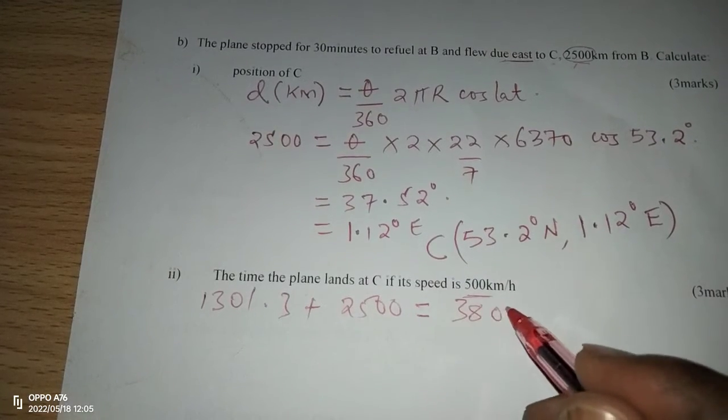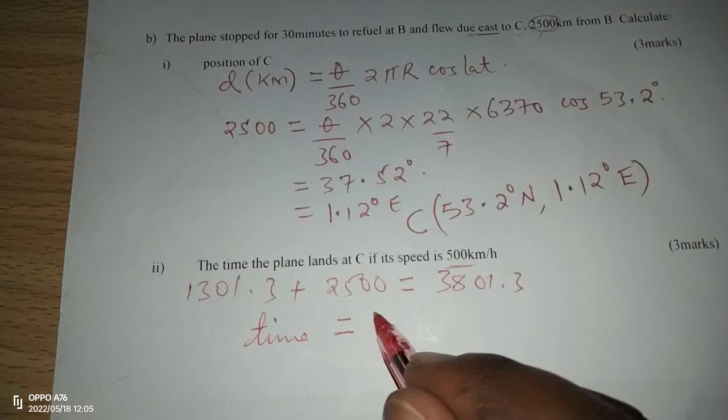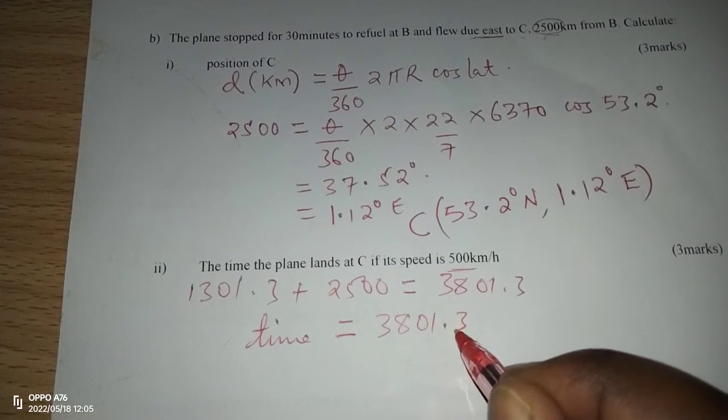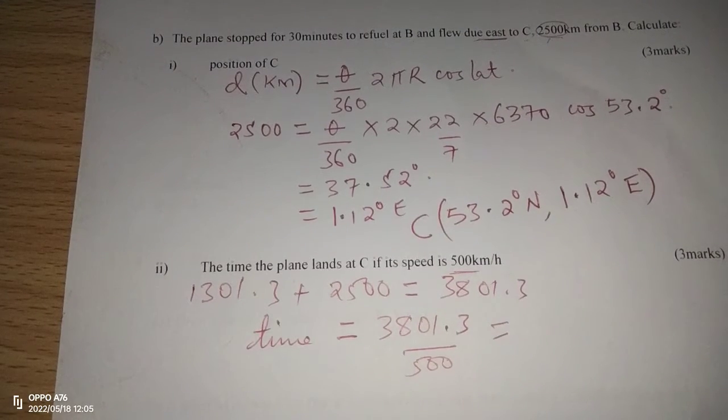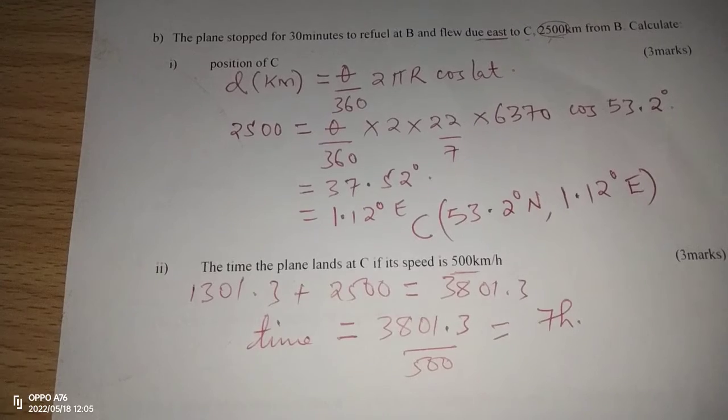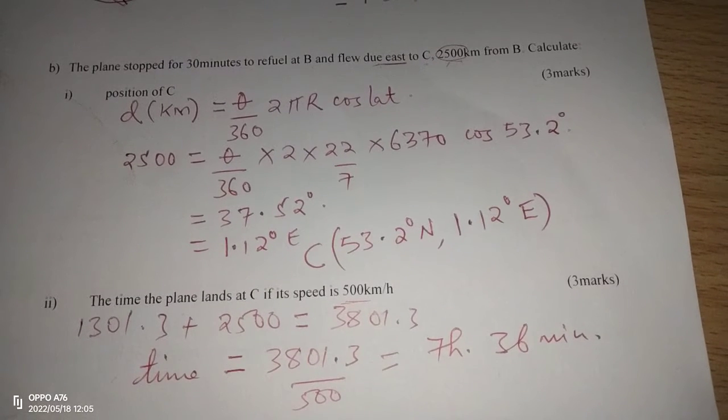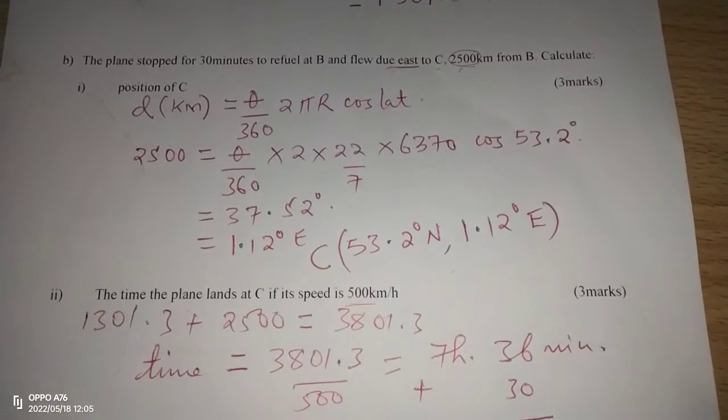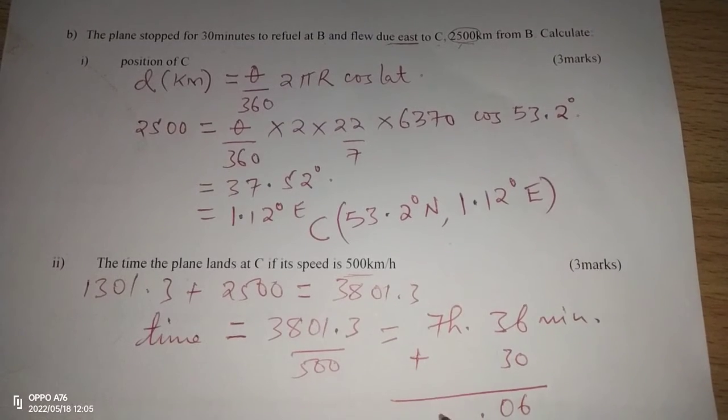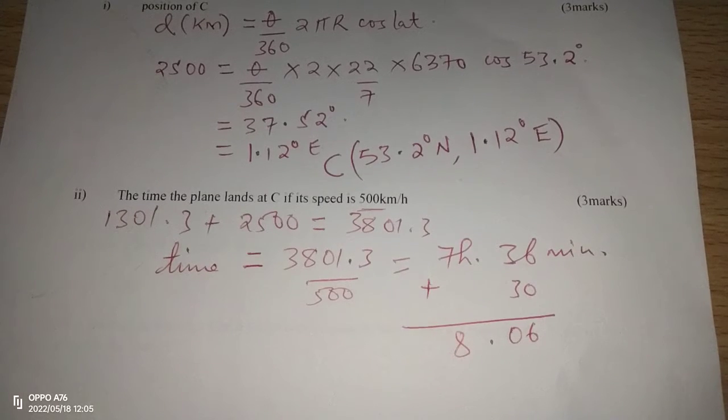For us to get the time taken, we are going to get 3801.3 and we divide with a speed of 500. Dividing this by 500 will give us 7 hours and 36 minutes. 7 hours and 36 minutes is the total time when the plane will be moving. But now, remember, there is a 30 minutes stoppage. Therefore, we add the 30 minutes when the vehicle stopped to get refueled. So it means 8 hours and 6 minutes will be the total time it took.